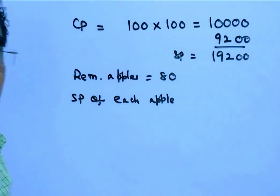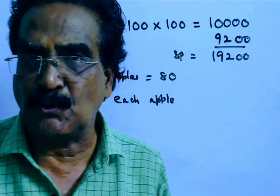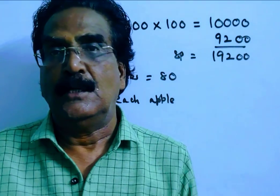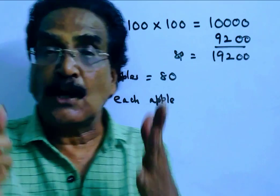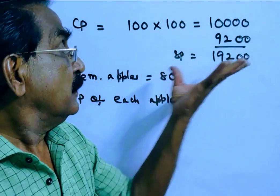But 20% of the apples are rotten. Now he has only 80 apples left, so he has to sell these 80 apples for rupees 19,200.